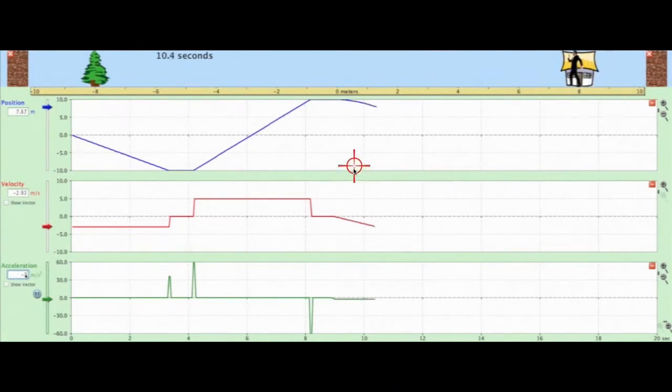Note that for this section here, the slope or the gradient is becoming steeper in the negative direction. That is, if we find the gradient at any given point, it is becoming steeper and steeper. This results in our velocity becoming more and more negative. Note that the gradient of the velocity time graph is no longer zero, and is in fact negative. Therefore, you can see that we actually have negative acceleration.